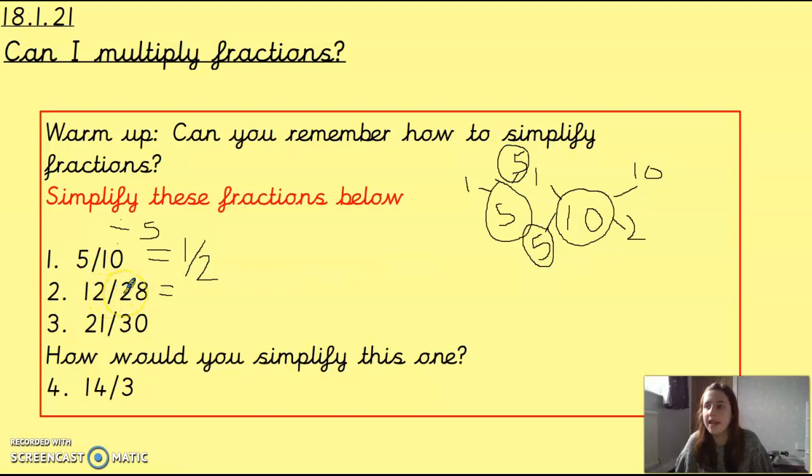Then we've got 12 twenty-eighths. Now, if you did your factor bugs again, you'd know that they both have a 4 in them. So we're going to divide 12 by 4, which would give us 3, and 28 by 4, which would give us 7.